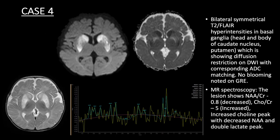Another case of a 3-month-old male patient shows bilateral symmetrical T2 FLAIR hyperintensities in basal ganglia, which is showing diffusion restriction. MRS shows decreased NAA and double lactate peak.